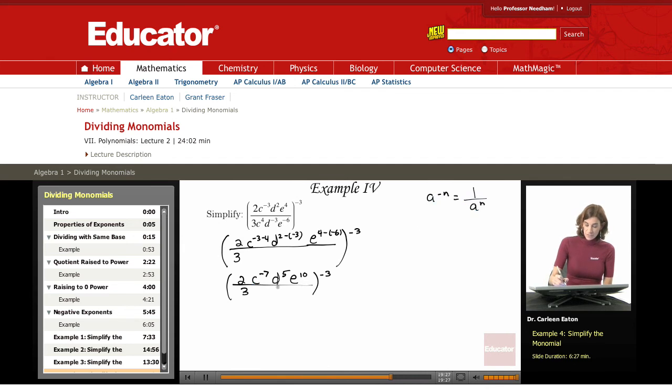So if I have C to the negative seventh, I can just change that to the reciprocal and change this negative seven to a positive. So the C is going to go to the denominator and become C to the seventh, D to the fifth, E to the tenth.